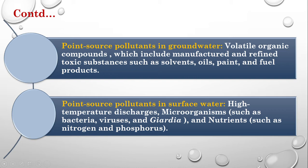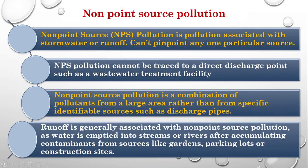In groundwater, point source pollutants include volatile organic compounds such as solvents, oils, paint, and fuel products. In surface water, high-temperature discharge, microorganisms, and nutrients can cause pollution — all categorized as point sources of pollution.